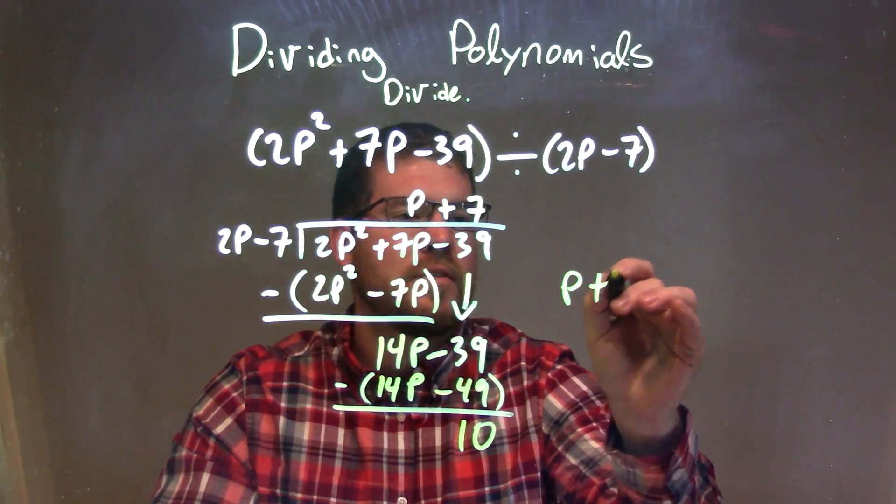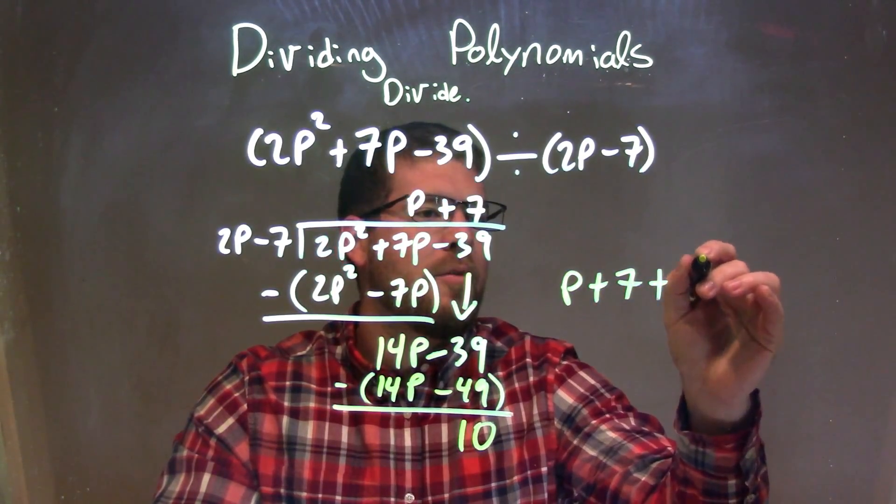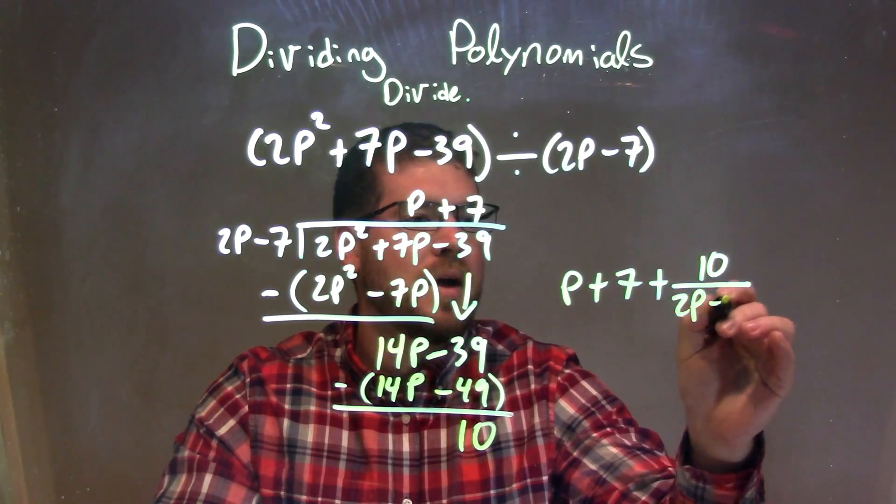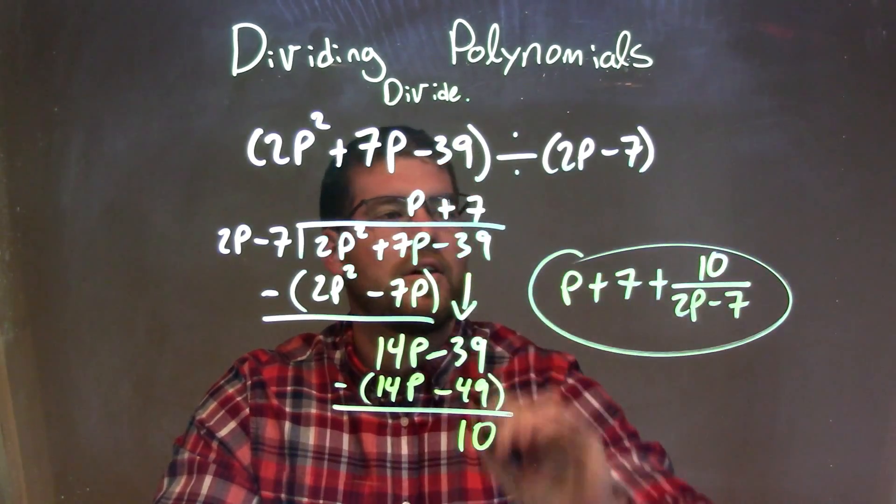So our final answer is just p plus 7 plus my remainder 10 over my divisor, which is 2p minus 7. And that is our final answer.